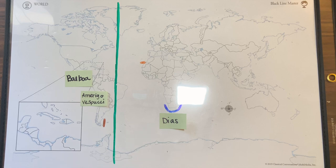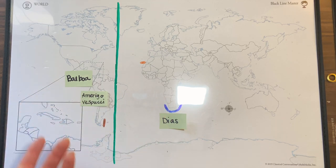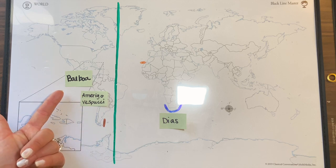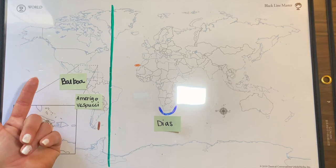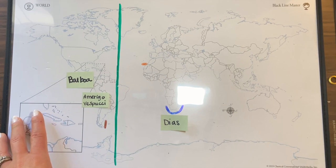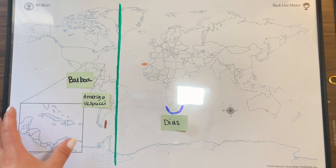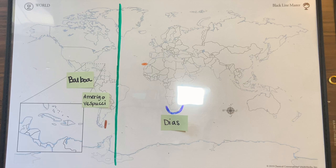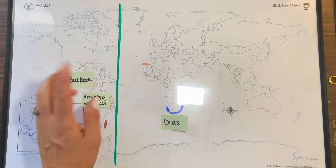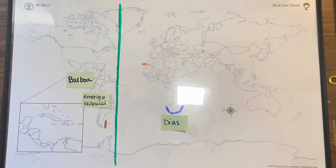Balboa was a conquistador, meaning he would conquer. When he found these lands he conquered the people and claimed them as Spanish territory. He left for the Americas in 1500, but eventually in 1519 he was found guilty of various crimes and was beheaded in January 1519. He was the first European to see the Pacific Ocean, and very shortly thereafter was beheaded.